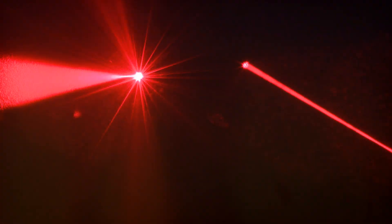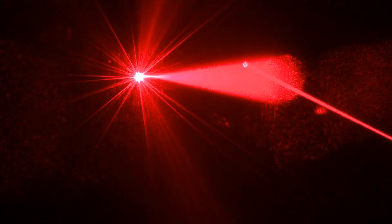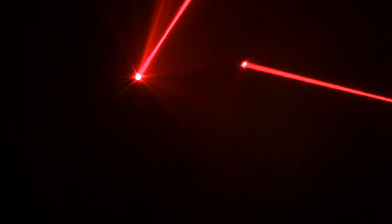Imagine a simple setup, a barrier with two slits and a screen behind it. When particles like electrons or photons are fired at the barrier, they can pass through either slit and hit the screen. You might expect to see two distinct bands on the screen corresponding to the two slits. But what actually happens is far more intriguing.